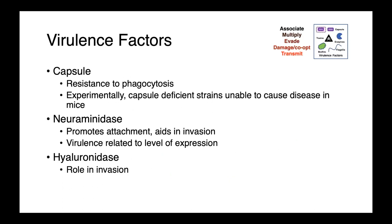A number of virulence factors have been identified, including the presence of capsules, which provide resistance to phagocytosis. Experimentally, capsule-deficient strains have been shown to be unable to cause disease in mice. Erysipelothrix rhusiopathiae also produces neuraminidases, which promote attachment and aid in cellular invasion, and the virulence of a particular strain has been shown to be related to the level of expression of neuraminidase.